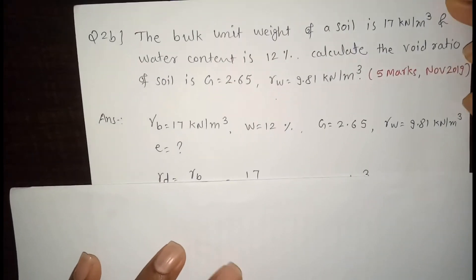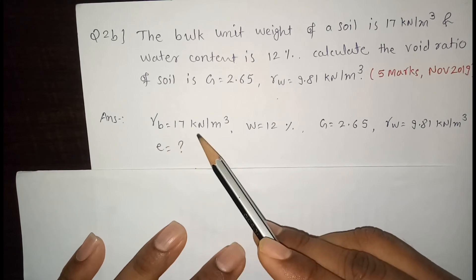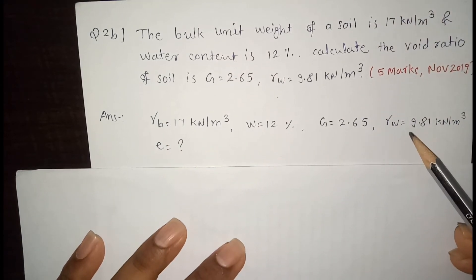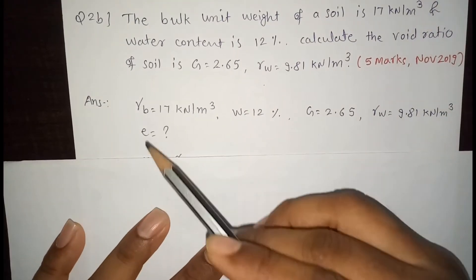First write down the given data. That is gamma bulk unit weight is 17 kN per m³, water content is 12%, G is 2.65, gamma W is 9.81 kN per m³, and we have to calculate E.